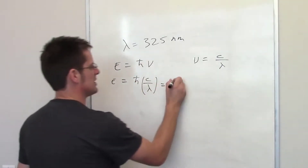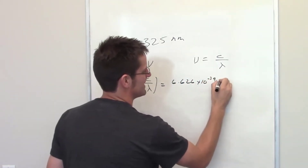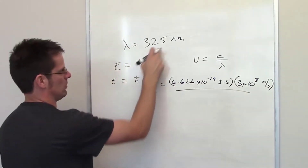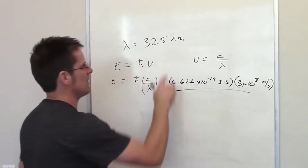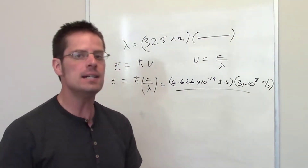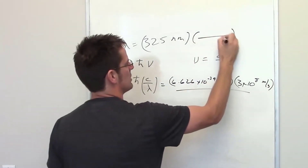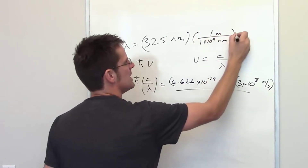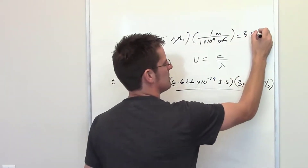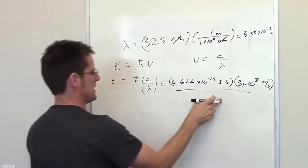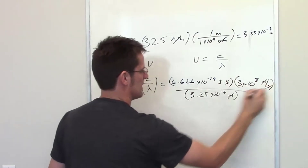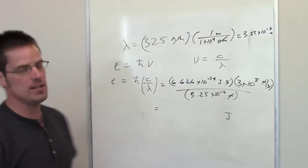At this point, all we have to do is throw in our numbers. Planck's constant is 6.626 times 10 to the negative 34 joules times seconds, multiplied by the speed of light — 3 times 10 to the 8th meters per second — divided by wavelength. Wavelength is given as 325 nanometers, but I need to convert to meters. 325 nanometers times (1 meter / 10 to the 9th nanometers) equals 3.25 times 10 to the negative 7th meters. I substitute that in. Meters cancel each other out, seconds cancel each other out, and I'm left with joules.